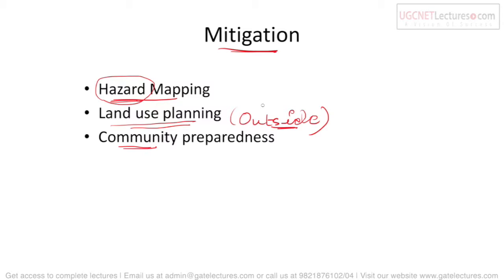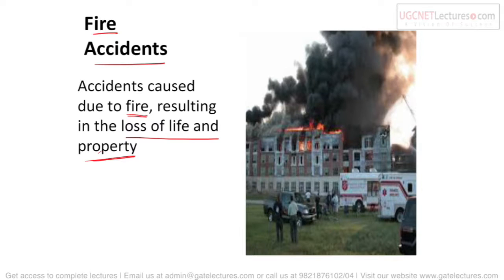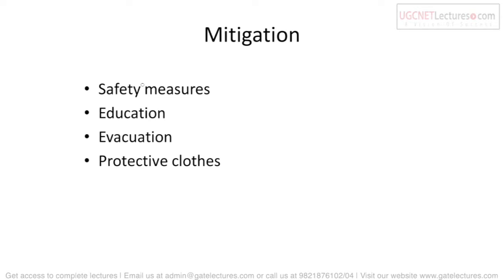The next is fire accidents. Accidents caused due to fire resulting in loss of life and property are called fire accidents. How can we prevent them? Safety measures are very important — in your home, workplace, or office, you need to ensure all proper fire safety measures are in place.